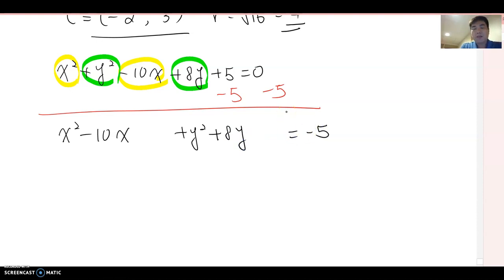Now we are going to add some constant value for x term and y term here. So what is the half of 10, not negative 10, so -5 squared, so 25. If you add on the left side, don't forget to add on the right side as well. And now 8 divided by 2, which is 4 squared, so 16.